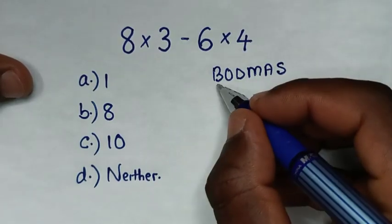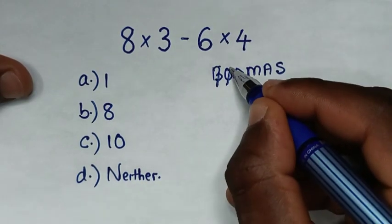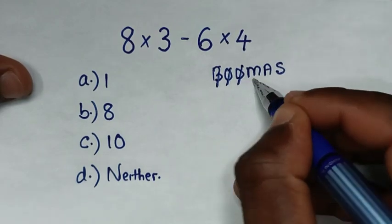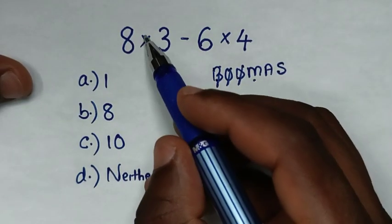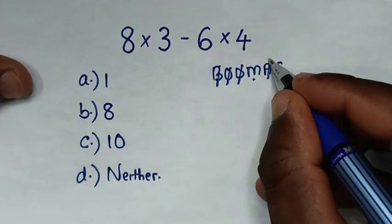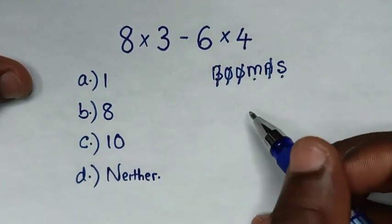Whereas B - bracket, in this problem we don't have bracket. Also we don't have orders or exponents, also we don't have division. Multiplication - we have two multiplications, this and this. Addition, we don't have addition. Subtraction, we have this subtraction.